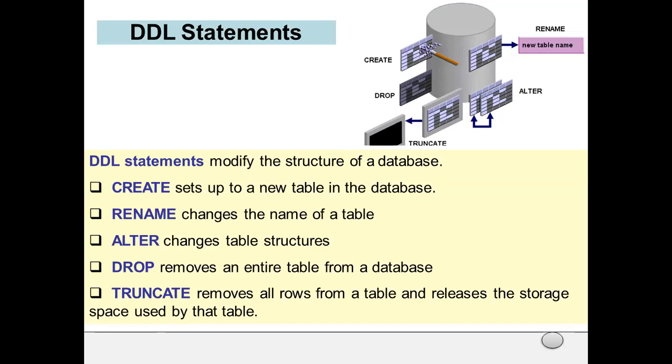ALTER changes the table structure. DROP removes the entire table from the database—if you want to remove the entire structure, use the DROP command. TRUNCATE removes all rows from a table and releases the storage space used by that table.